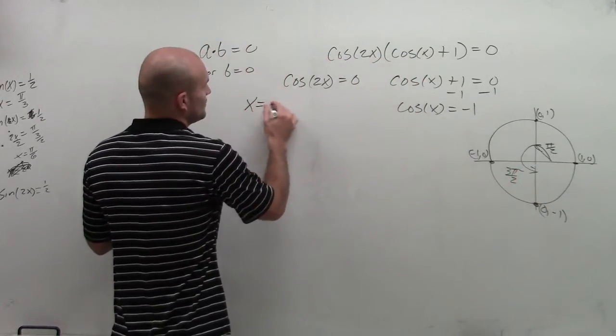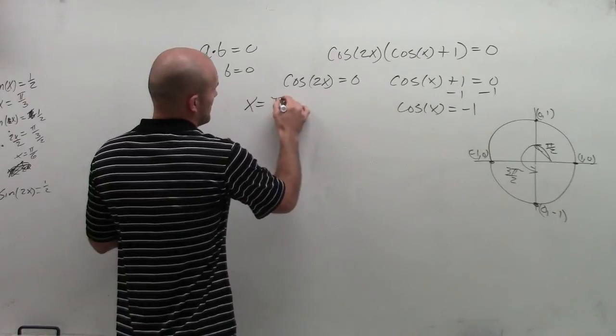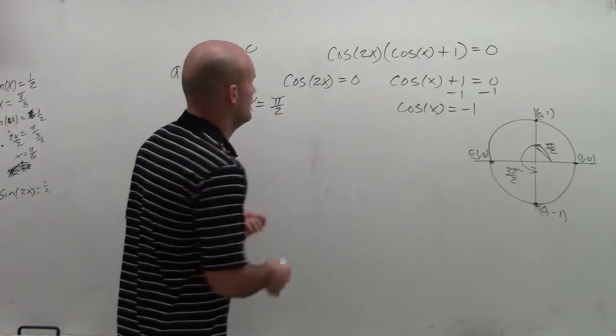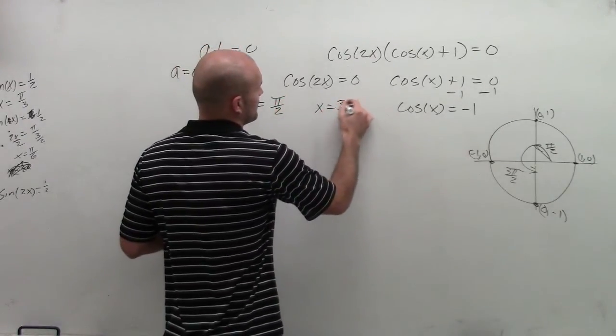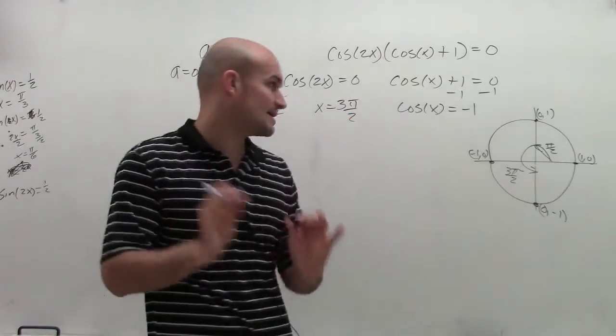So therefore, I can just simply write x equals pi halves and then x equals 3 pi halves. And I'll show you a different way to kind of write this up in a second.